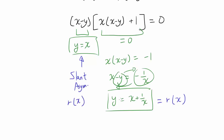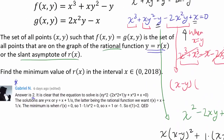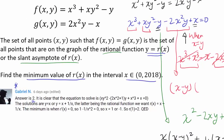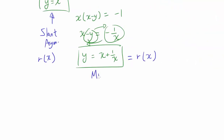It is pretty obvious that y equals x plus 1 over x is the rational function, and y equals x is the slant asymptote of r(x) — because as x gets very large, 1 over x becomes very small, and the rational function behaves very similarly to y equals x as x approaches infinity. So we have everything we need: we just have to find the minimum value of r(x) in the open interval (0, 2018).